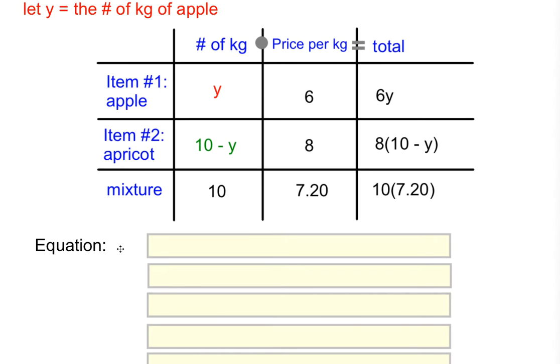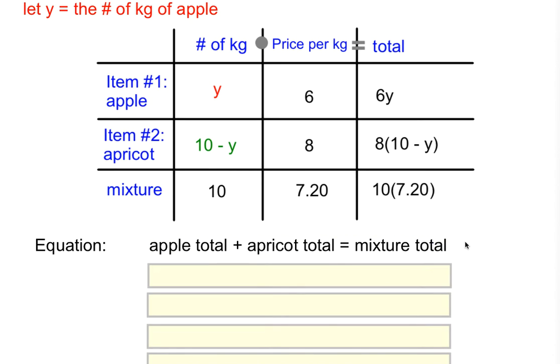For the equation, you're going to look at this table, especially at the total column. And the way the equation would work is you would take your total for your item number one. In our case, it's the apple. You add it to the total of item number two, which is your apricot. And it's going to be equal to the total for the mixture. So in terms of an algebraic equation, this is what we're starting with.